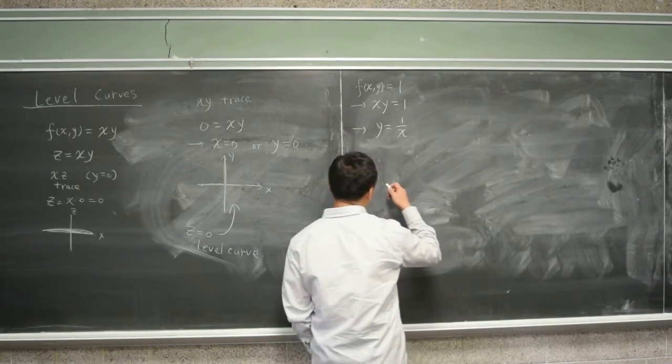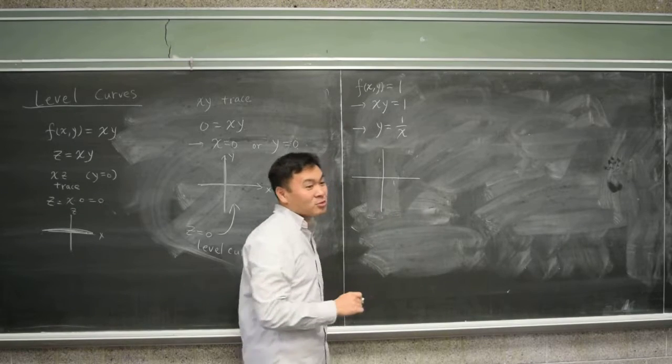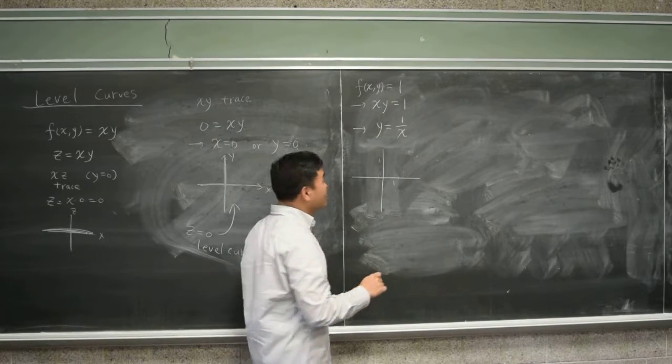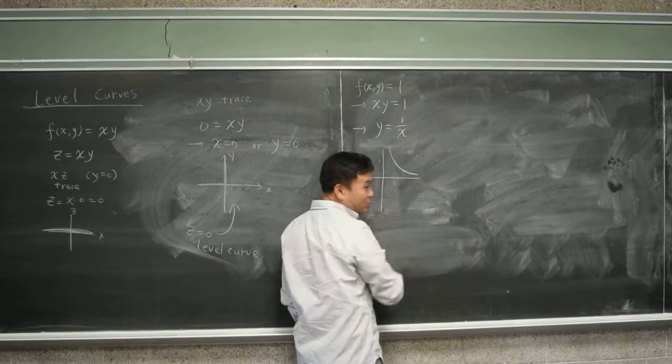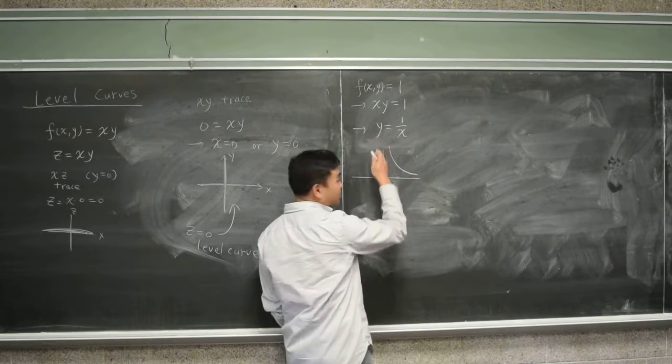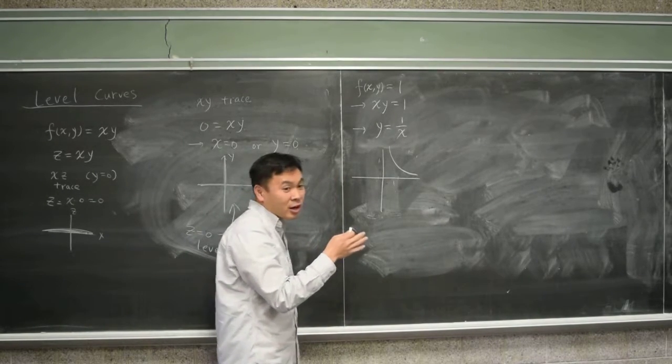Yeah, you saw this probably in junior high school as an inversely proportional graph. So x and y are inversely proportional. If x increases, y decreases. If x decreases, y increases.